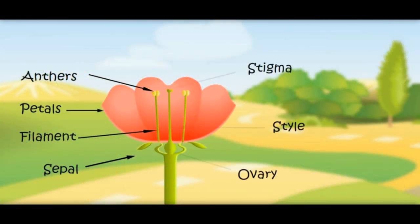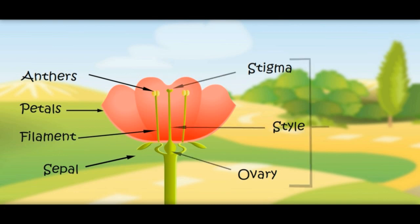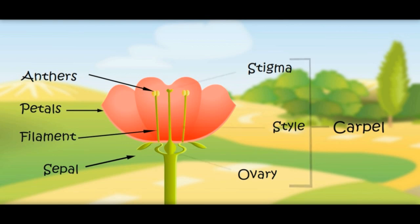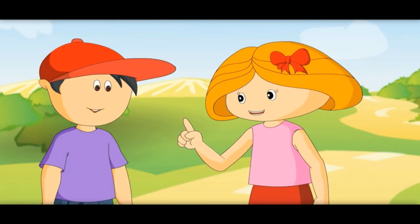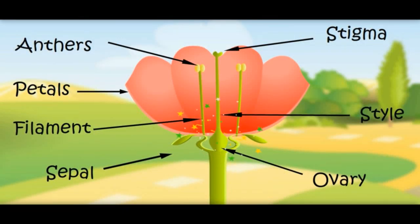Female parts are stigma, style, and ovary. All these female parts are called carpel. You are right. Also put nectar here. Oh, I forgot. Here it comes.